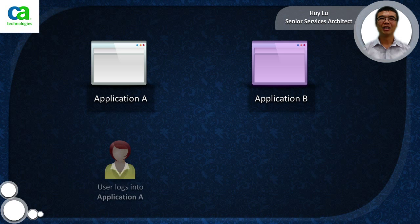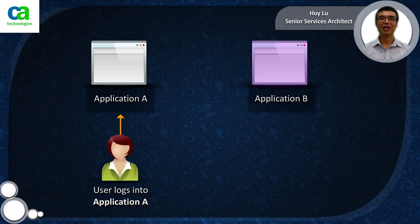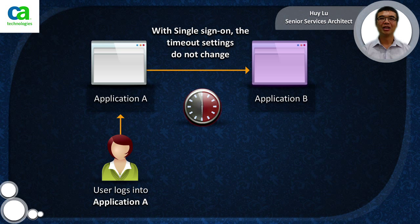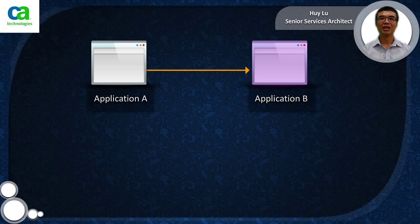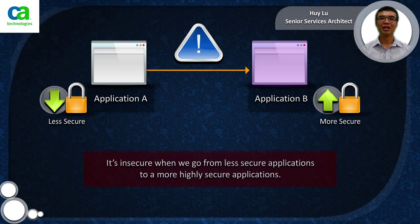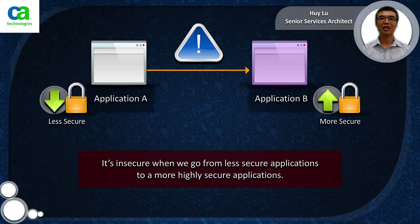So what happens if the user first logs on to application A? The user's timeout values will be set to 30 minutes idle and 2 hours max. In the same single sign-on scenario, if the user then moves to application B, again its idle and max timeouts do not change. So in this case it can be considered insecure, as we're going from a more lax timeout setting to a more stringent timeout setting from application A to application B.